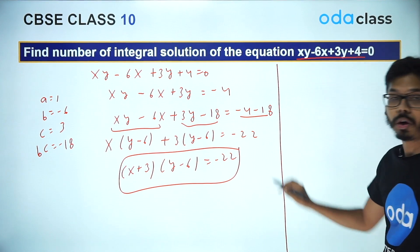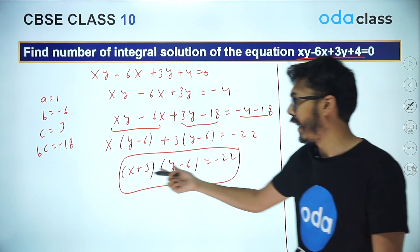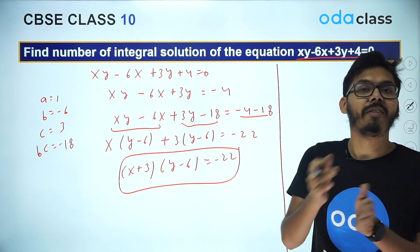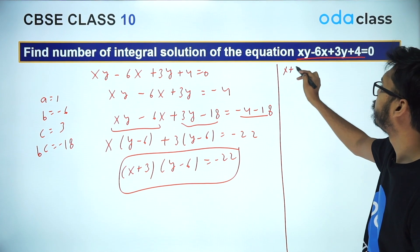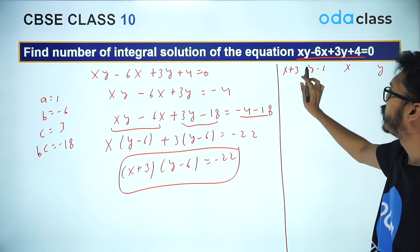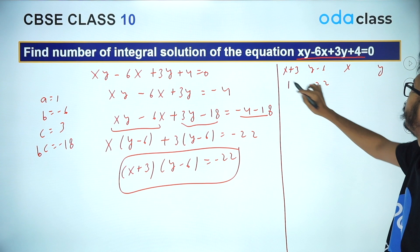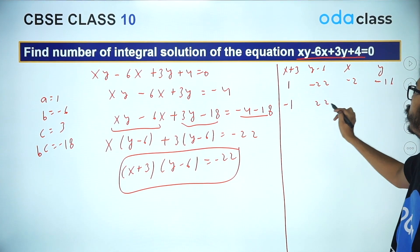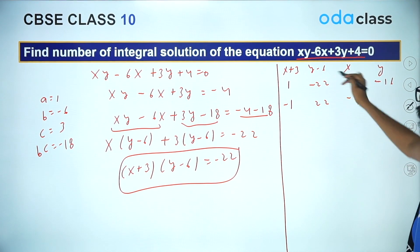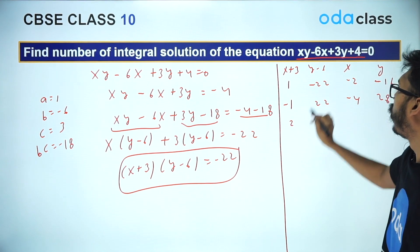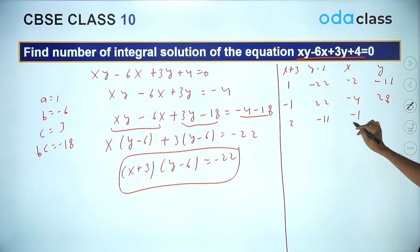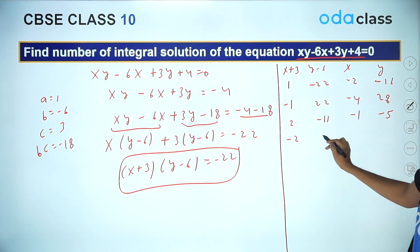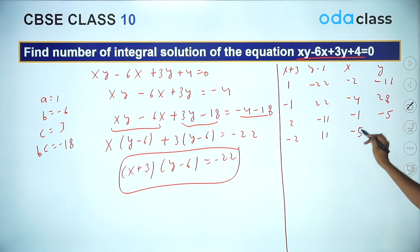Working through all factor pairs of −22: if X+3 = 1, Y−6 = −22, then X = −2, Y = −16; if X+3 = −1, Y−6 = 22, then X = −4, Y = 28; if X+3 = 2, Y−6 = −11, then X = −1, Y = −5; if X+3 = −2, Y−6 = 11, then X = −5, Y = 17. All four pairs yield integer values.